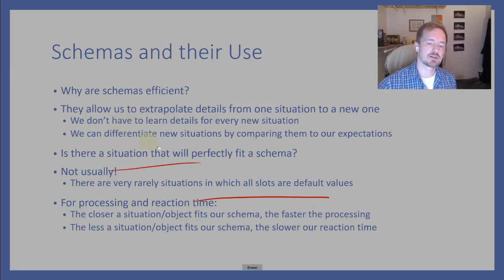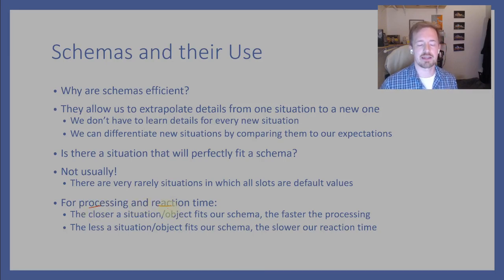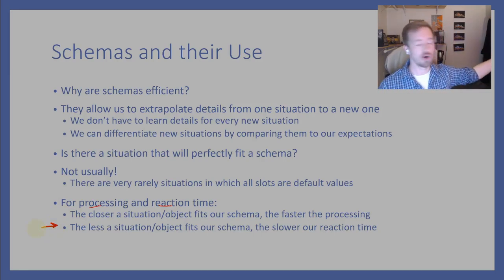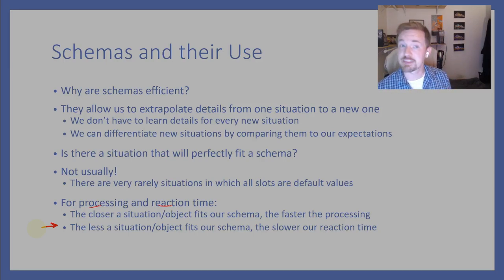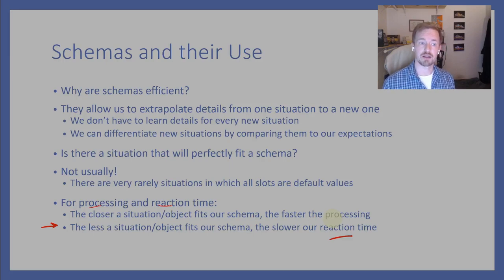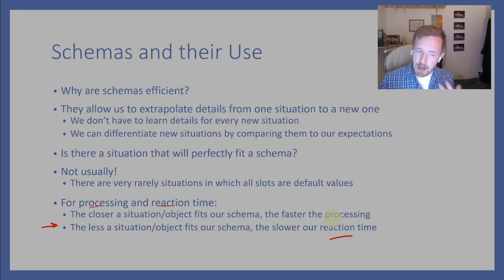We'll talk about this later in terms of processing and reaction time. Something that really fits our schema will have very fast reaction times and not require much mental processing. But new examples that are far away from our schema will have slow reaction times. For example, is Domino's fast food? I have to think about it — slower reaction time, more processing required. You have to wait about 10 minutes for your pizza, the price is kind of fast-food-y, the taste is too, you order at the front counter. So I guess it is, but it's not our perfect schema for fast food.